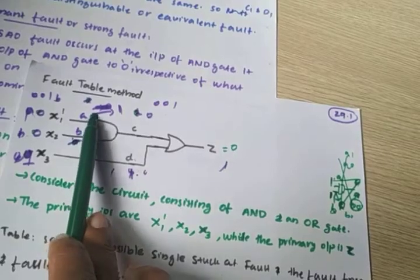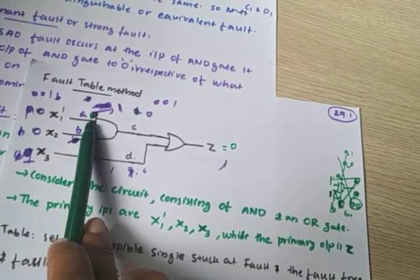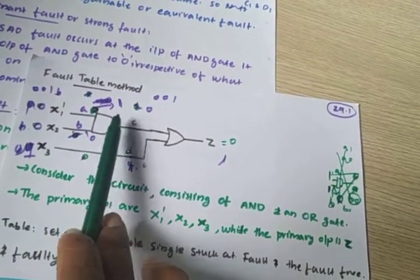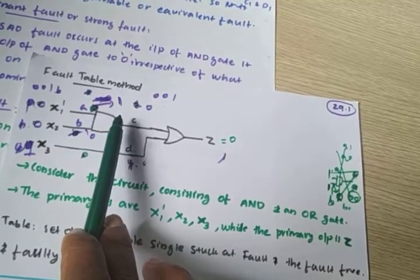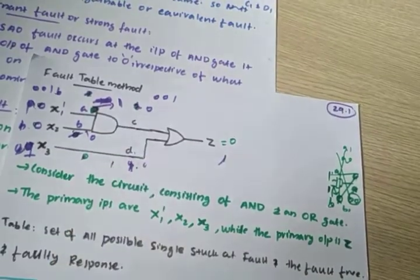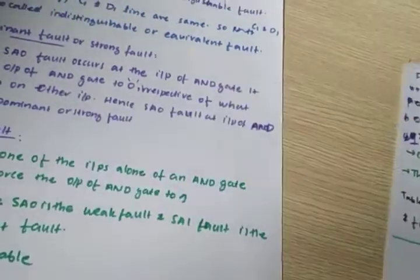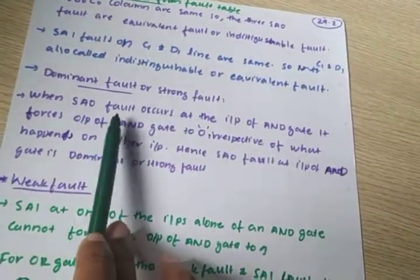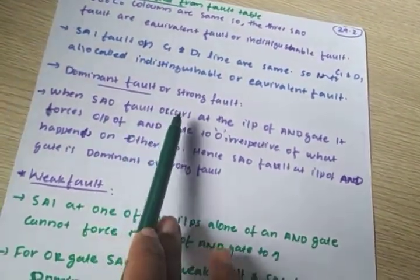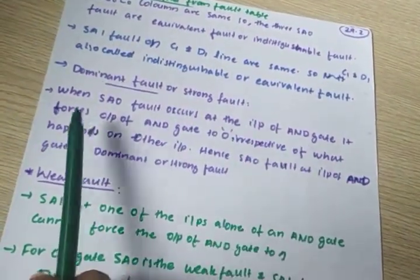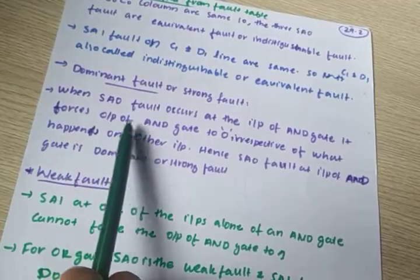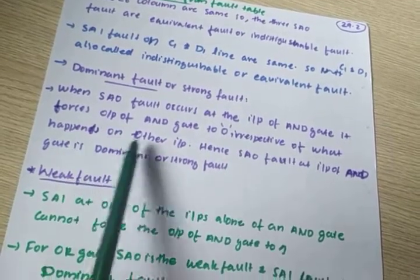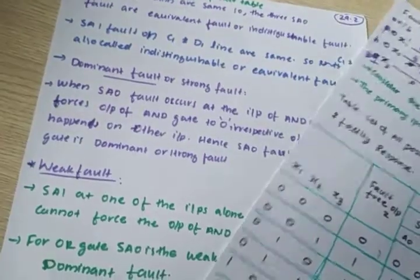Consider this AND gate. If one of the inputs of an AND gate is 0, irrespective of the other input, the output of the AND gate is always 0. That is written here: stuck-at-0 fault occurring at the input of an AND gate forces the output of the AND gate to 0 irrespective of what happens to the other input.